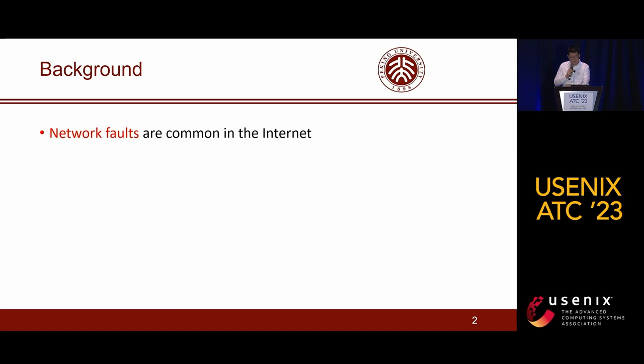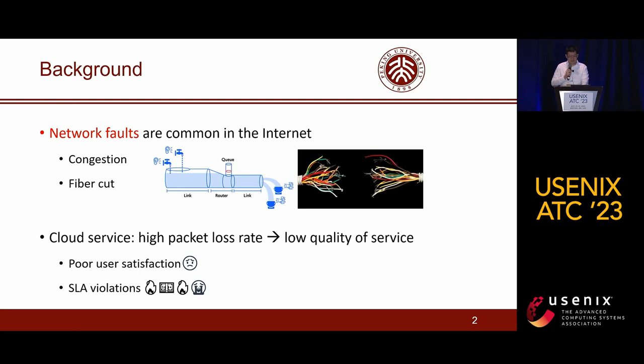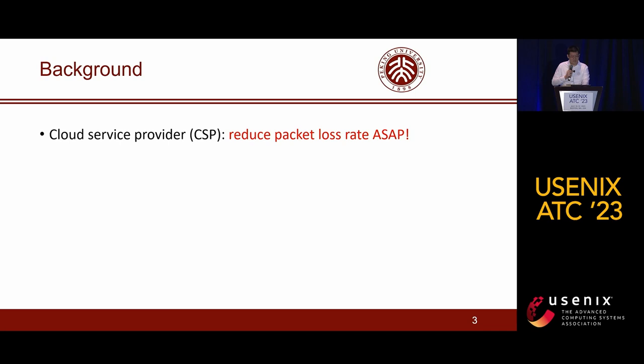Network faults are common in the Internet. Typical causes include link congestion, fiber cut, and more. For cloud services, network faults can result in high packet loss rate, thereby degrading the quality of service. Consequently, this often diminishes user satisfaction and can potentially lead to violation of SLA, thereby causing significant loss in terms of customer reputation and revenue.